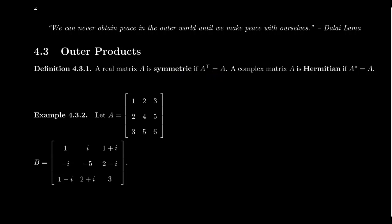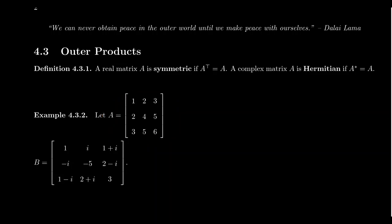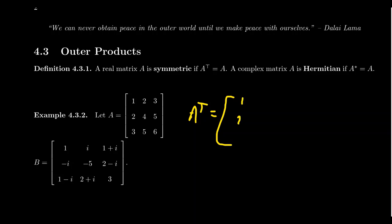Take, for example, this matrix A right here. It's a 3 by 3 matrix: 1, 2, 3, 2, 4, 5, 3, 5, 6. If we take the transpose of this matrix, rows become columns and columns become rows. If I take the first row of A, that becomes the first column of A transpose, so you get 1, 2, 3.